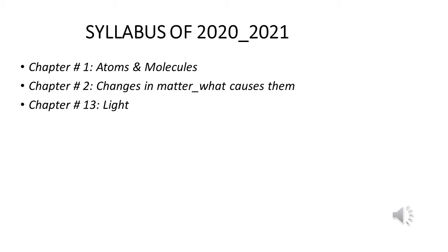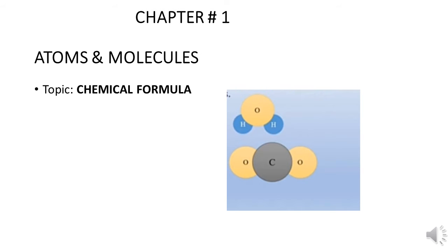In the previous lectures, the syllabus of 2020 and 2021 was shared with you. It contains three chapters: Chapter 1, Atoms and Molecules; Chapter 2, Changes in Matter—What Causes Them; and Chapter 13, Light. We are at Chapter 1, Atoms and Molecules, and today's topic is chemical formula.